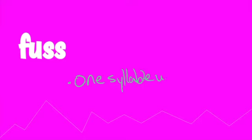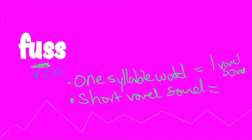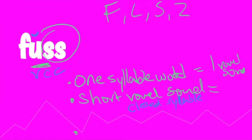Here is the word 'fuss.' Fuss is a floss word because it is a one syllable word. It has a short vowel sound — I know it's short because it's a closed syllable: one vowel closed in by one or more consonants. Does this word end in F, L, S, or Z? Yes, it ends in S. So it's not 'fus' with one S — it's 'fuss' with two, because you double F, L, S, or Z.